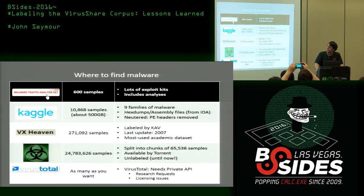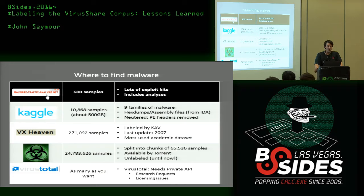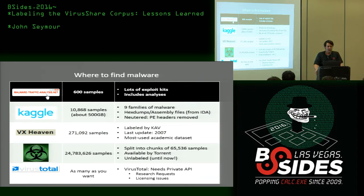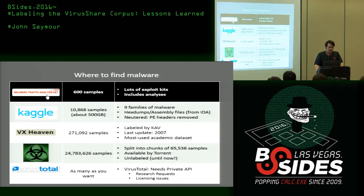The first place I love is MalwareTrafficAnalysis.net. It's only got about 600 samples, so it's not very useful for full-scale productionized machine learning. But it has a couple of really good points: there are lots of exploit kits in it, and it includes analyses for every single sample. There's a guy who goes through, takes a PCAP and the executable, uploads to VirusShare, tells how he reverse-engineered it, and writes it all down. This is very useful when creating models because you need a bit of domain expertise.